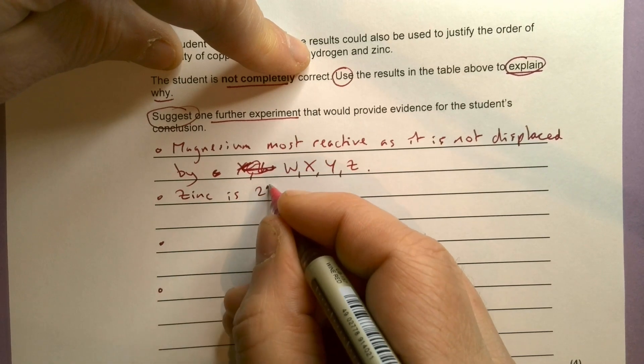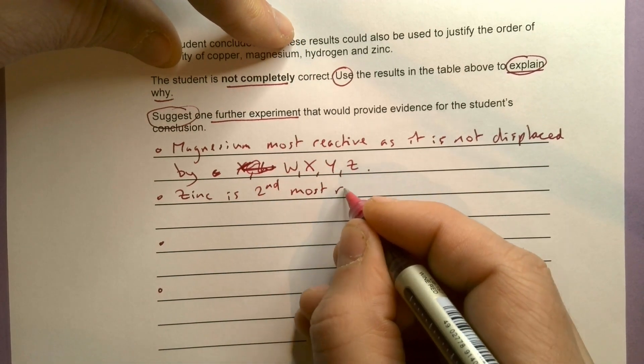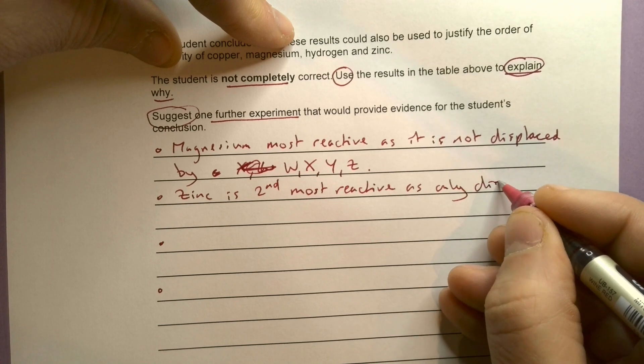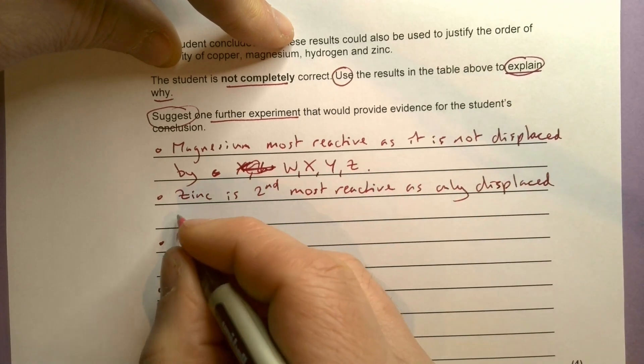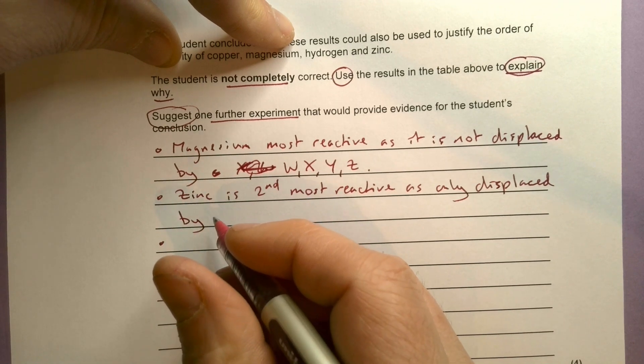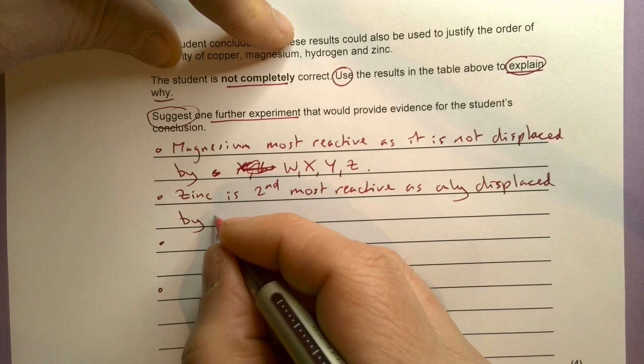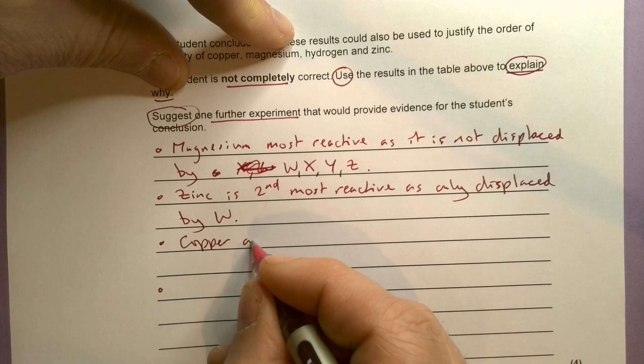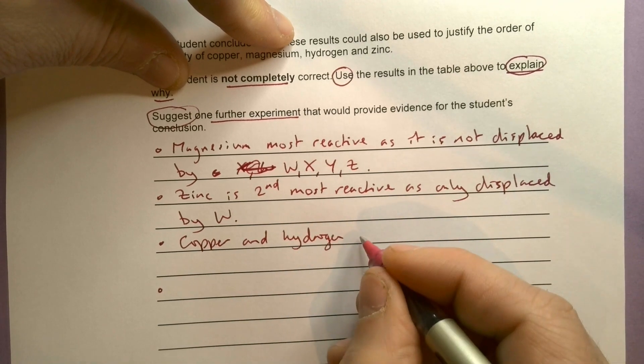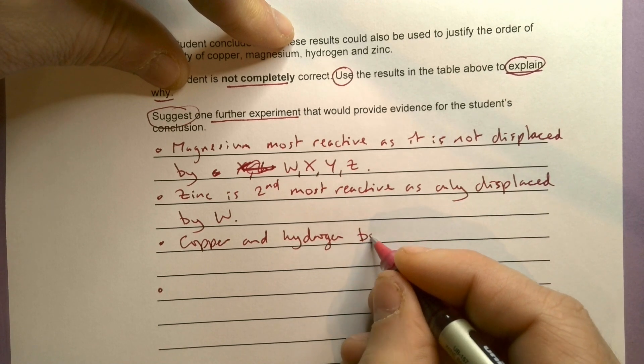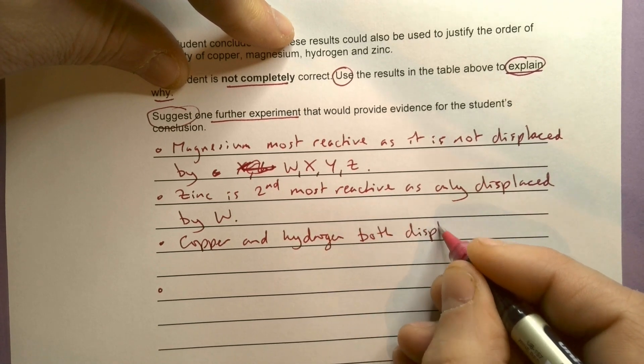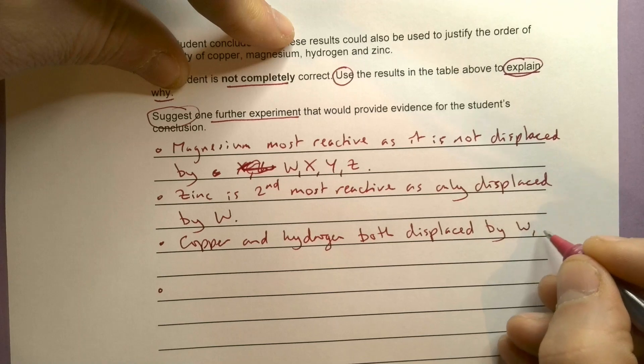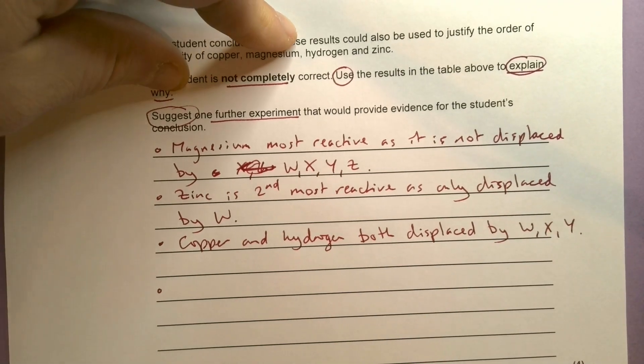Zinc is second most reactive as only displaced by W. The tricky bit we've got there is that copper and hydrogen are both displaced by three. We can't tell.